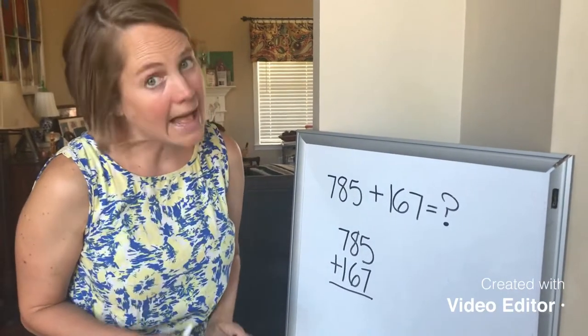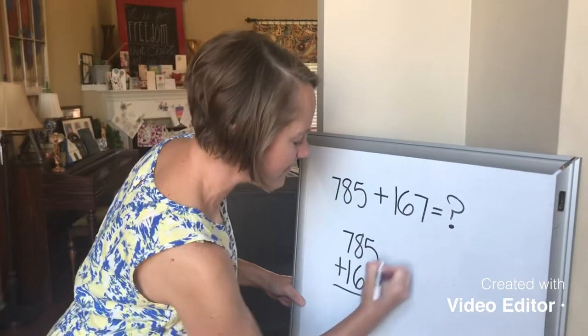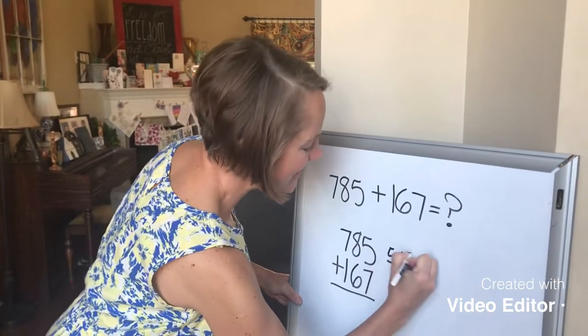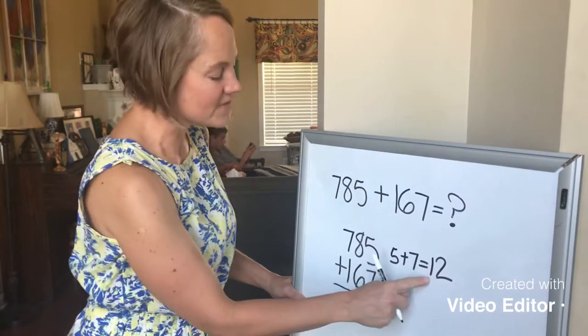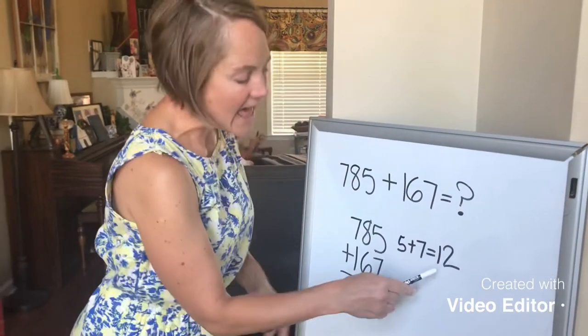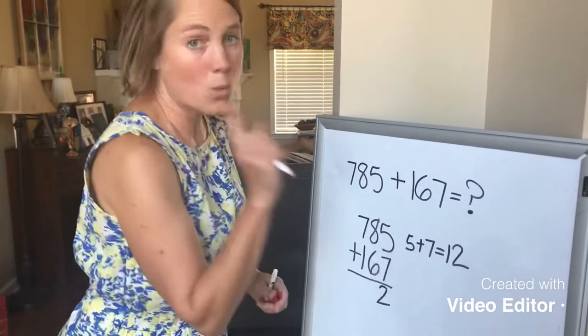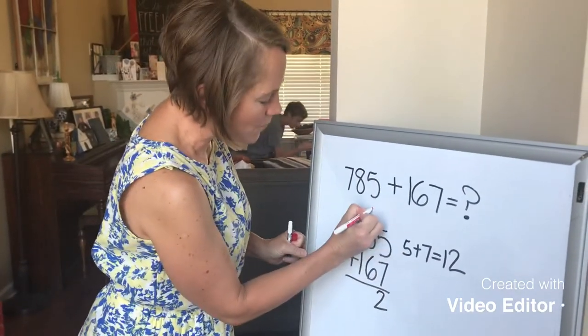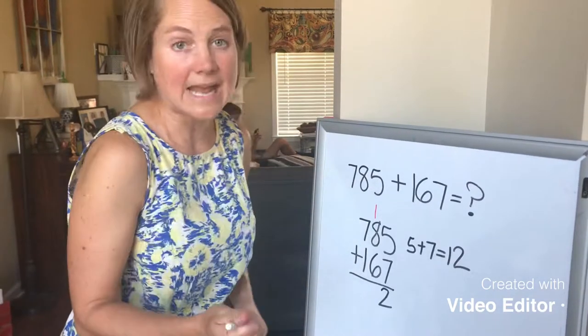Whenever you use the standard algorithm, you have to start with the 1s. So I'm going to add 5 plus 7. And I know that 5 plus 7 equals 12. But I can't put both of these digits in the 1s place. Only the 1s digit can go there. And what am I going to do with this 1? Well, I know that that 1 represents 1 ten. So I'm going to put that 1 ten up here in the 10s column. And now I can add my 10s.